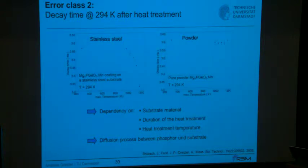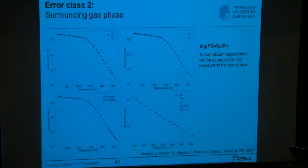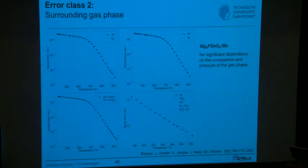The surrounding gas phase can also have an impact. This phosphor was exposed in an oven with a cell that could be flooded with different gases — air, oxygen, nitrogen — and the calibration curves superimposed almost perfectly. Pressure variation and addition of CH4 and water vapor also had no effect. This phosphor is truly insensitive to the surrounding gas phase.